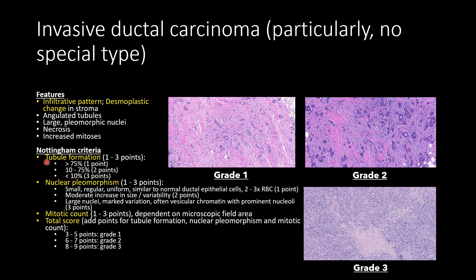Nuclear pleomorphism is difficult to appreciate at this magnification, but generally the larger and more variable the nuclei, the higher the grade. Mitotic count also depends on the microscope field, but more mitoses corresponds to a worse grade. A total Nottingham score of three to five is grade one, six to seven is grade two, and eight to nine is grade three.